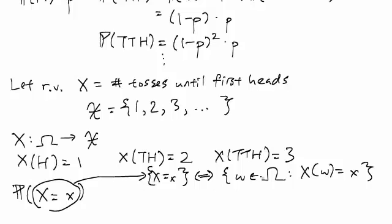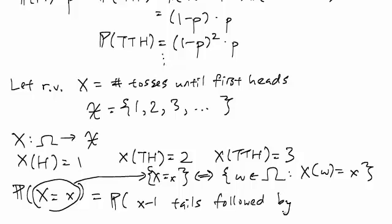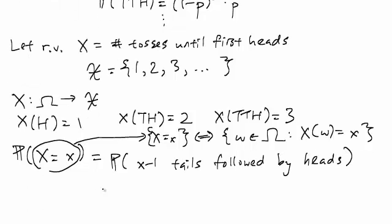So anyways, by doing this mapping, you can see that probability of X being equal to little x, this is just going to be the probability of x minus 1 tails followed by heads on the xth toss. So as discussed earlier, this is just going to be 1 minus P to the power of x minus 1 and then times P.